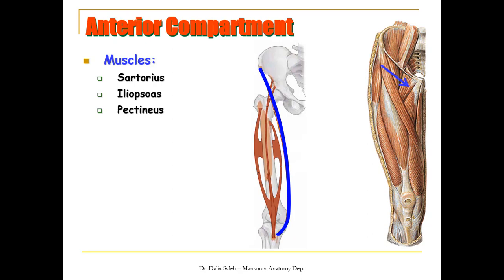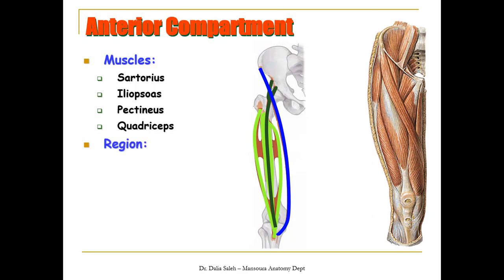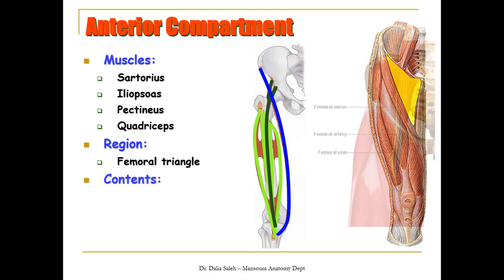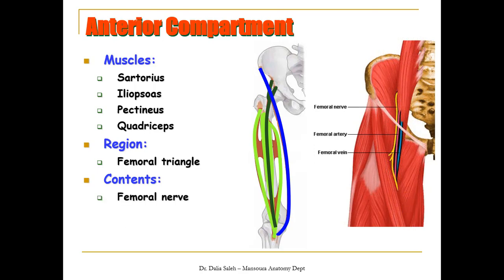The lower lateral part of the front of the thigh contains the quadriceps muscle, which is formed of four parts: the rectus femoris, the vastus medialis, the vastus lateralis, and deep to them lies the vastus intermedius. An important structure here is the femoral triangle, which lies at the upper medial part of the front of the thigh. It contains the femoral nerve, the femoral artery, the femoral vein, and the femoral lymph nodes.